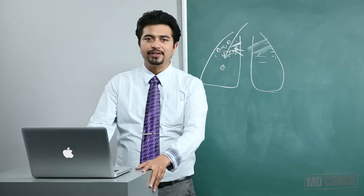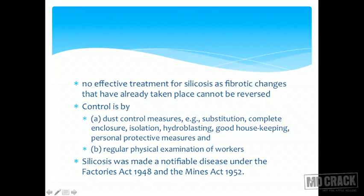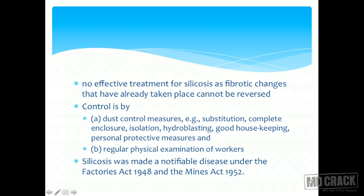Therefore, the tenets of prevention are control, done by dust control measures: substitution, complete enclosure, isolation, hydro blasting, good housekeeping, and use of personal protective measures. Substitution means abandoning the use of silica and using an available substitute. Complete enclosure means the blast or grinding area should be isolated so dust particles don't blow out. Hydro blasting means having water nearby so dust particles are absorbed by water. Personal protective measures include respirators and filters so dust particles get entrapped and don't reach the lung. Remember, the particle size reaching the alveoli was less than 5 microns.